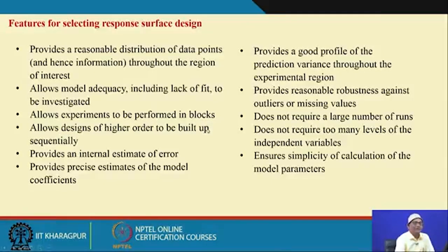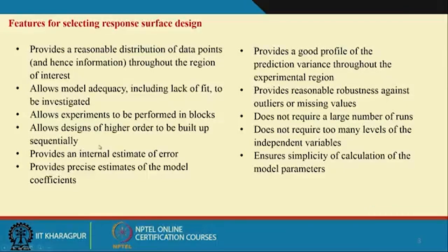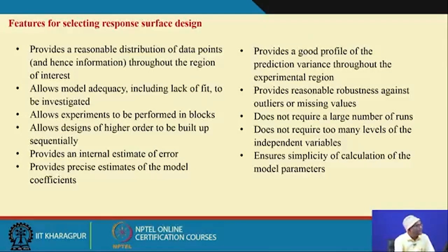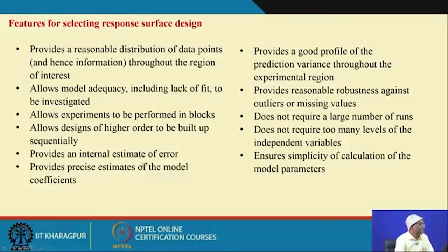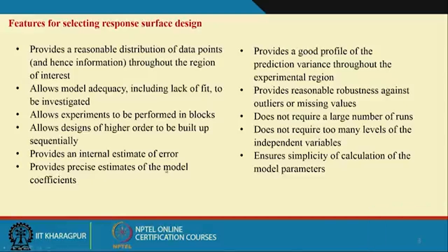Design of higher order should be built up sequentially — that is what we discussed in 2^k factorial and 2^(k-p) fractional factorial design — so that higher order interactions can be estimated if required. The design provides an internal estimate of error: between levels, within levels, all kinds of errors must be estimated. The design should provide precise estimates of the model coefficients — the beta values or regression coefficients — in such a manner that the variance of those estimates is minimum, meaning the design should allow you to obtain minimum variance estimates.